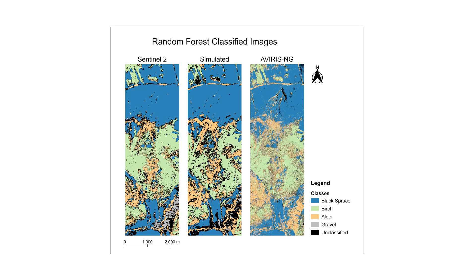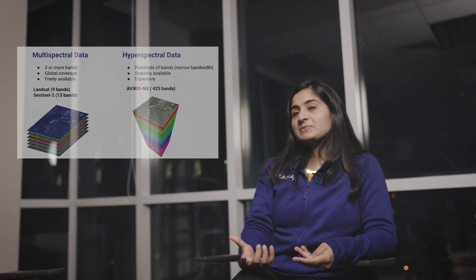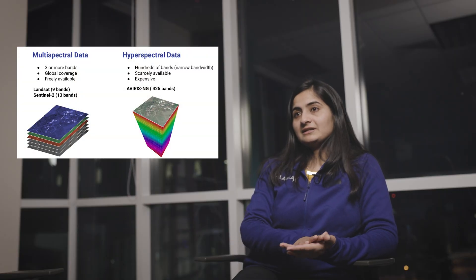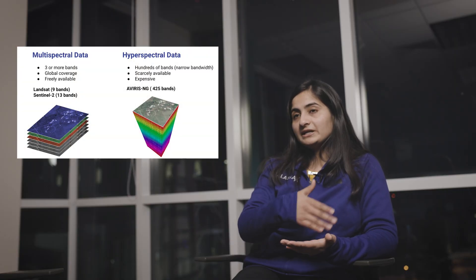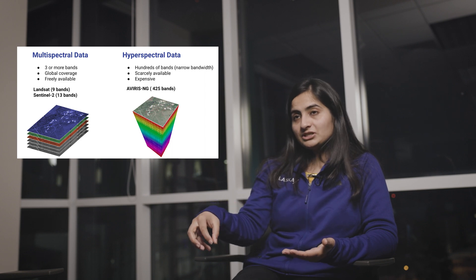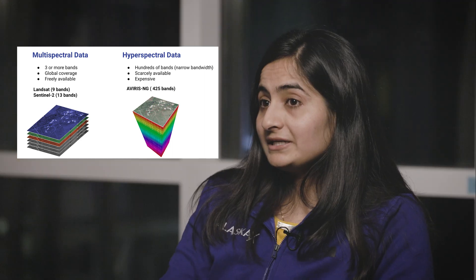urban settlements and trees using that data, but to differentiate within the trees we cannot do that using those 13 bands. So for that we need richer data. Hyperspectral data is that kind of data that has multiple bands in each channel, but this data is not freely available.